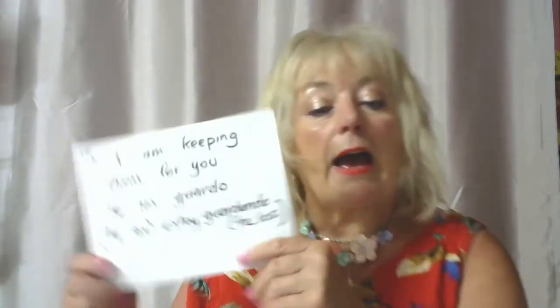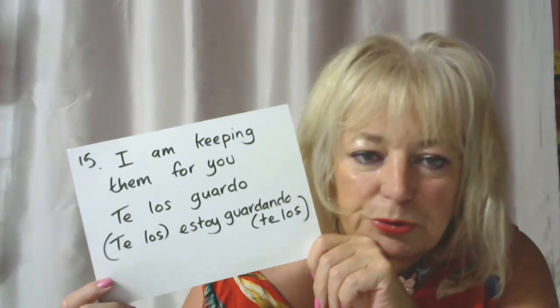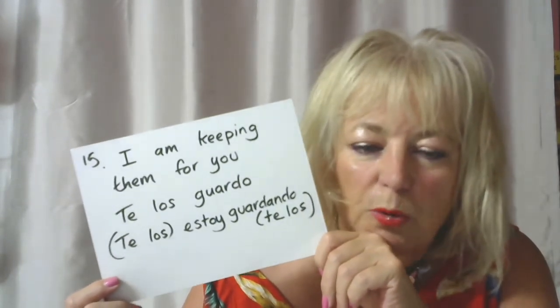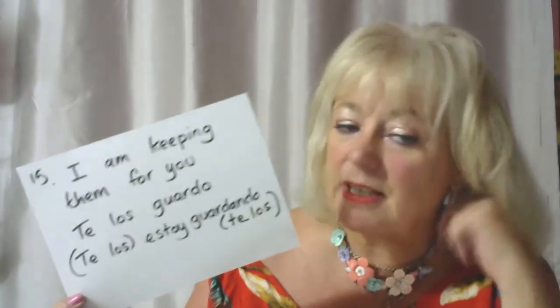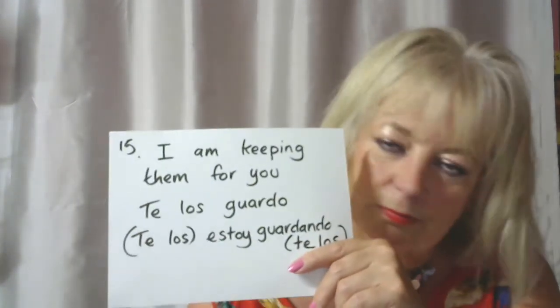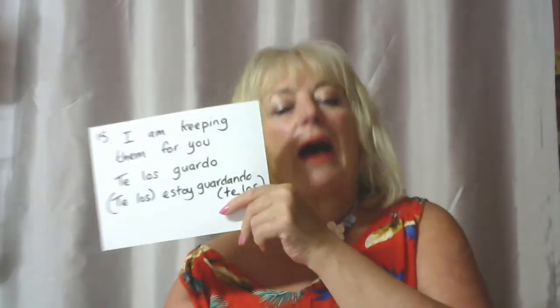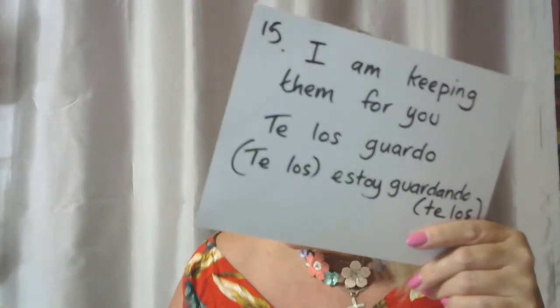Number fifteen: I am keeping them for you. Te los guardo. Te los estoy guardando, or estoy guardándotelos. I am keeping them for you. In English we don't say 'I keep them for you' — never. I am keeping them for you. 'I' — the subject; 'am keeping' — present progressive; 'them' — direct object; 'for you' — indirect object.